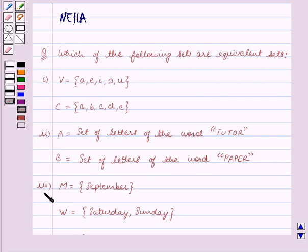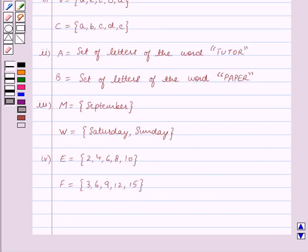The third part: M is equal to the set containing the word 'September'. W is equal to the set containing the words 'Saturday' and 'Sunday'.